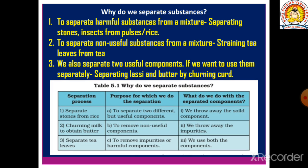So why do we separate substances? The first reason is to separate harmful substances from a mixture — like separating stones and insects from pulses or rice. We do this because if harmful substances enter our body, they can create problems. So separation of harmful substances from a mixture is very important.